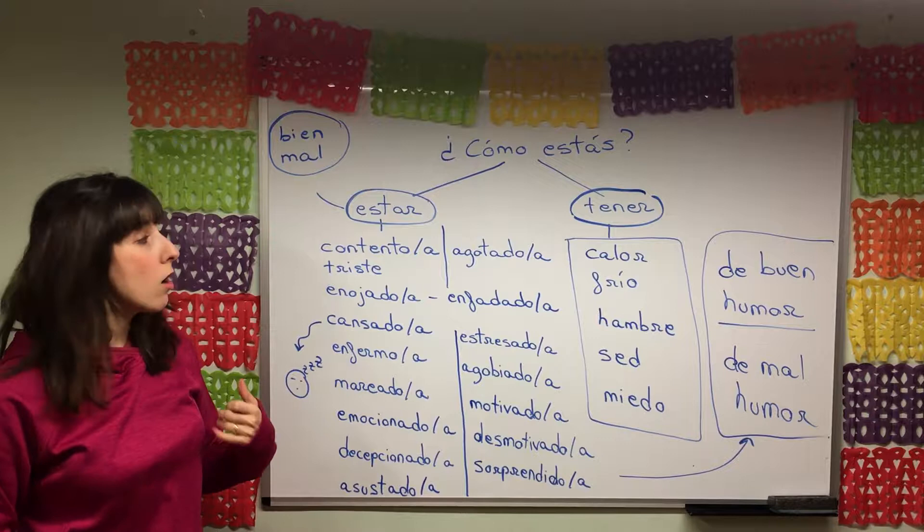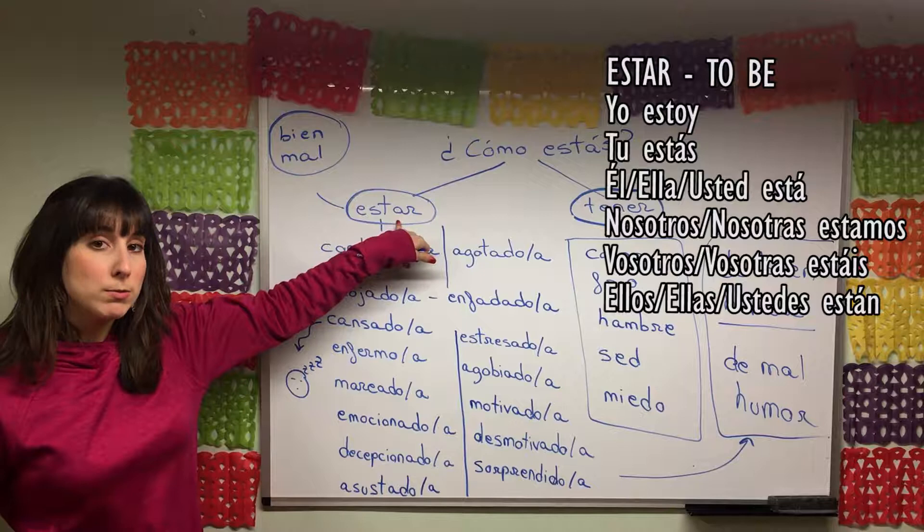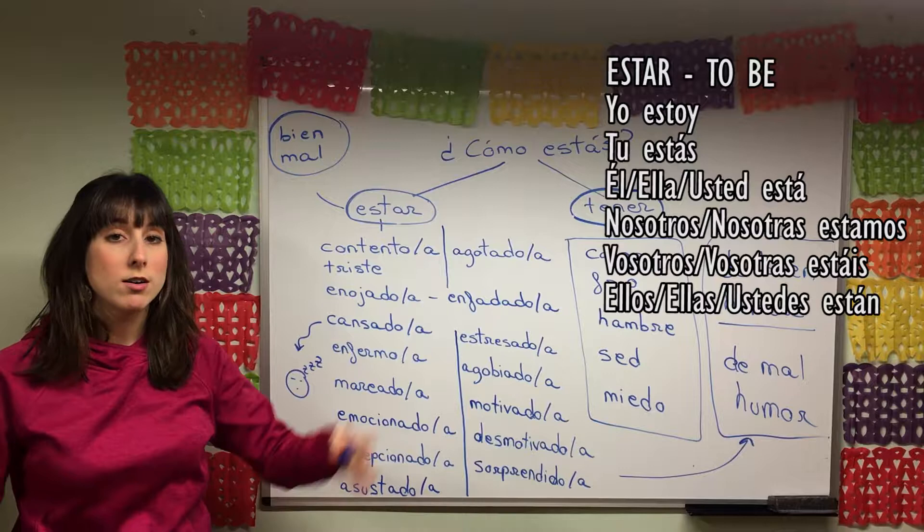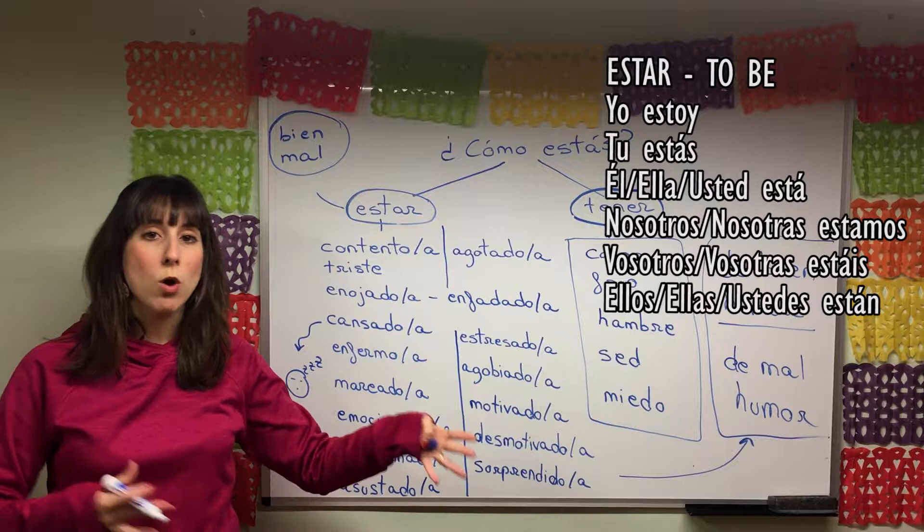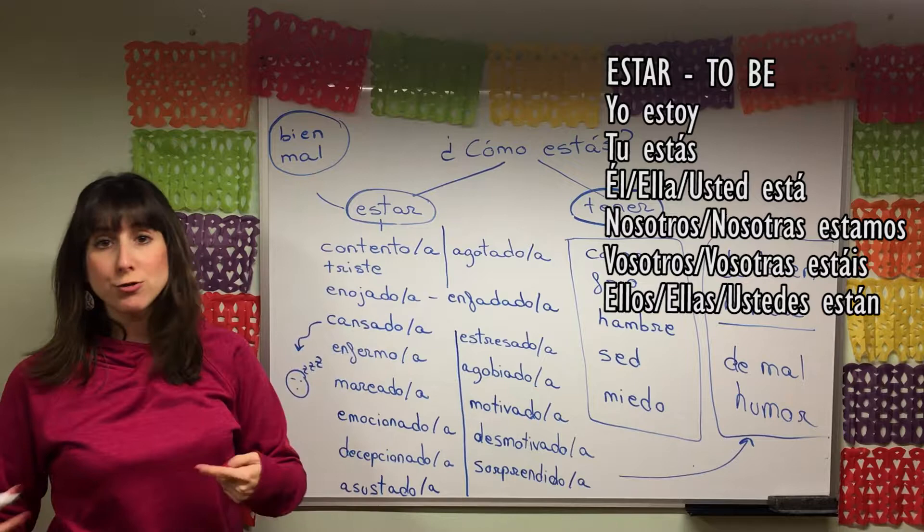The first one goes with answers that have the verb estar. As we said, the verb to be in English has two different translations in Spanish which are ser and estar, and I will be making a video explaining what the differences are and when we use one and when we use the other.